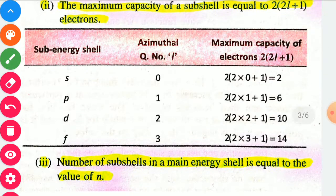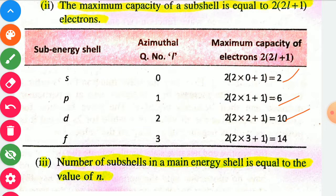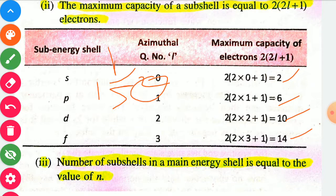In this table, for sub-shells s, p, d, and f: the azimuthal quantum numbers are 0, 1, 2, and 3 respectively. Using the formula 2(2l plus 1), the maximum electrons are 2 for s, 6 for p, 10 for d, and 14 for f. Therefore, in electron configuration notation we write s2, p6, d10, f14.